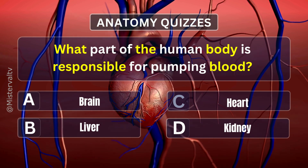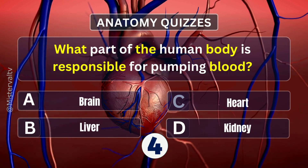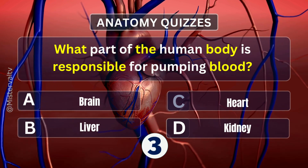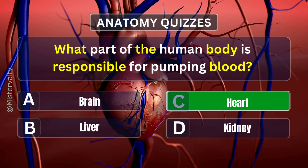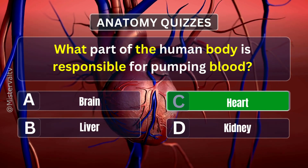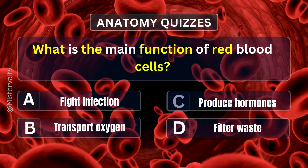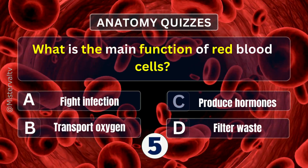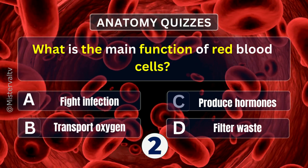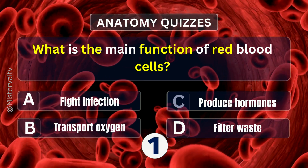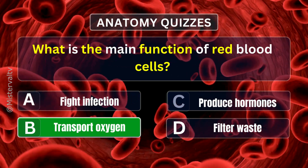What part of the human body is responsible for pumping blood? Answer. C. Heart. What is the main function of red blood cells? Answer. B. Transport oxygen.